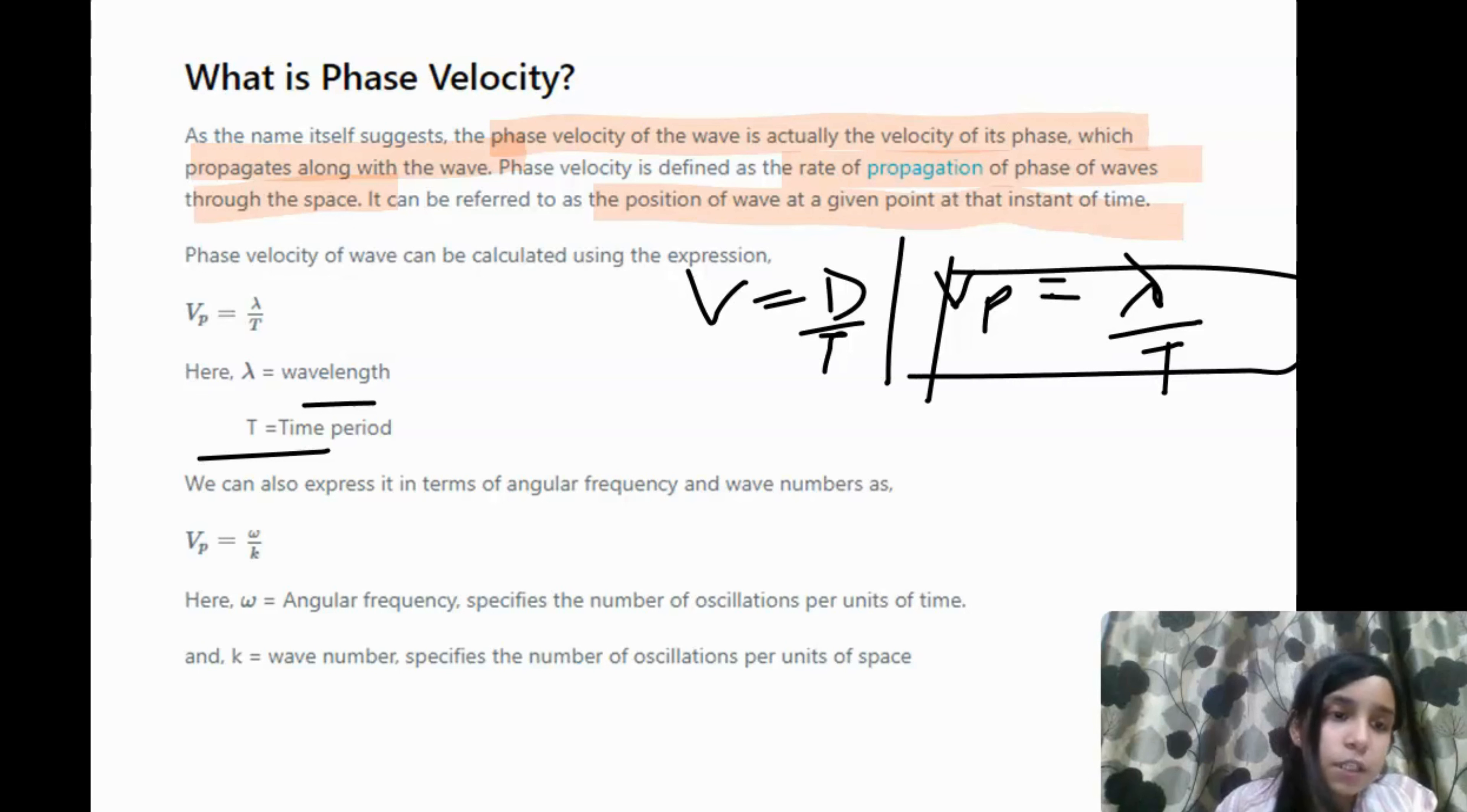Also, we are having another expression. If we write this in the angular frequency formula, then vp equals to omega over k. So these two formulas have our vp, which means phase velocity. Where our omega of course is angular frequency. And k is your wave number.